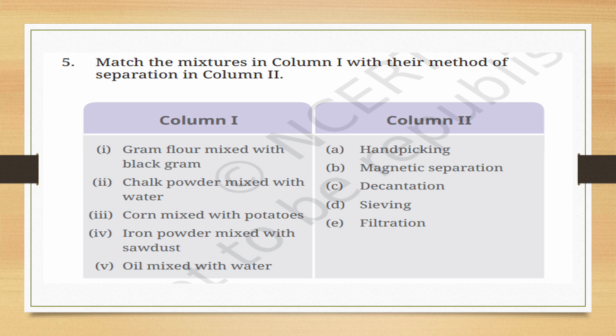Match the mixtures in column 1 with a method of separation in column 2. Gram flour mixed with black gram: sieving. Chalk powder mixed with water: filtration. Corn mixed with potatoes: handpicking. Iron powder mixed with sawdust: magnetic separation. Oil mixed with water: decantation.